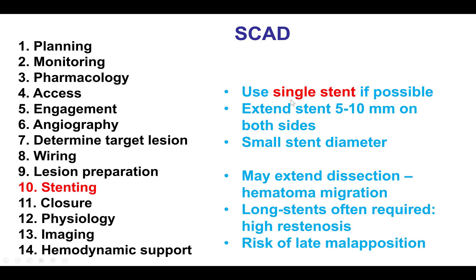When it comes to stenting, it is best to use a single stent, always making sure that both edges of the dissection are covered for at least 5 millimeters. The stent diameter should be small, and oversized stents should be avoided as they can extend the dissection. One should always keep in mind that stenting may extend a dissection or lead to hematoma migration and worsening of the patient's clinical status. Long stent lengths are often required, with a resultant high risk of restenosis, and after absorption of the subintimal hematoma, there is the possibility of late stent strut malapposition.